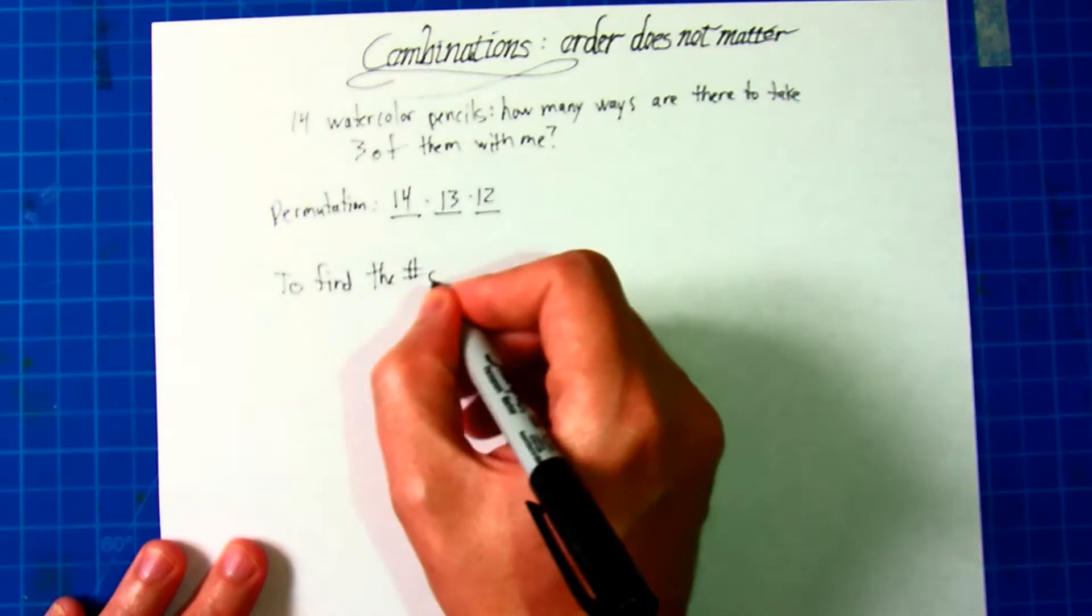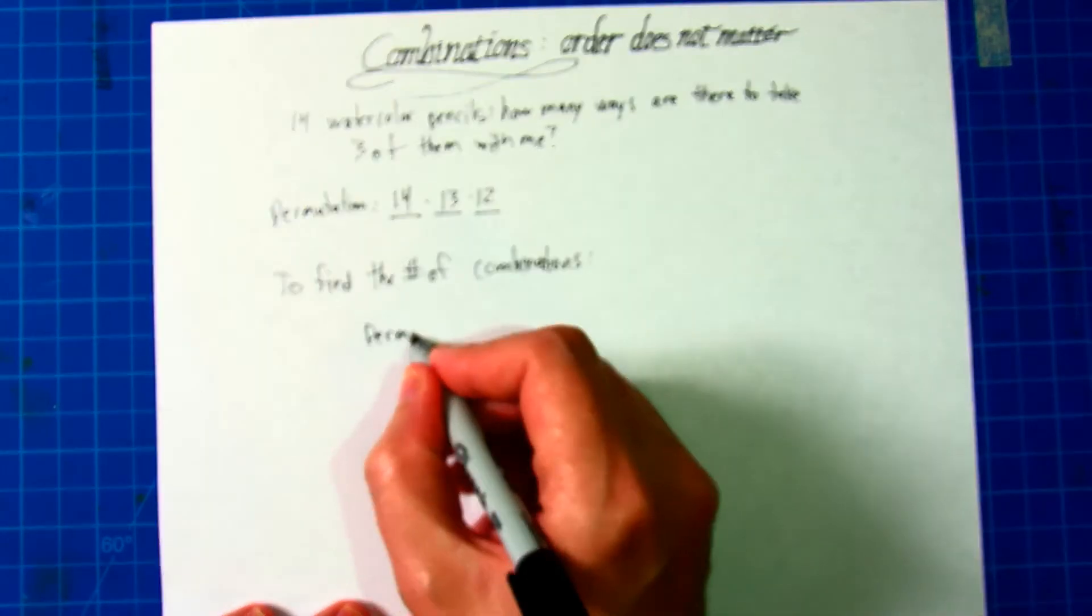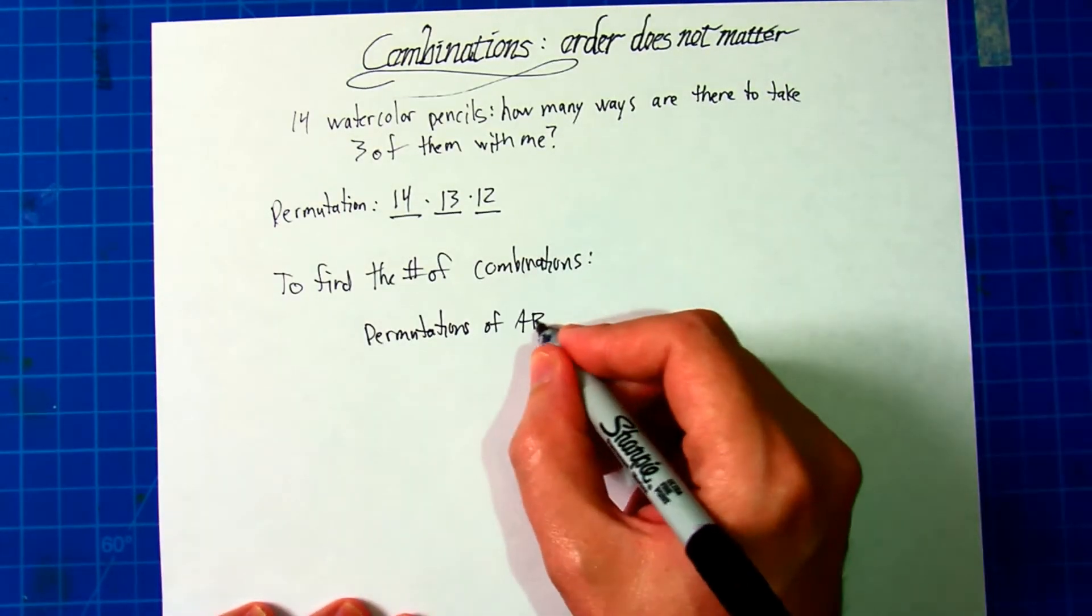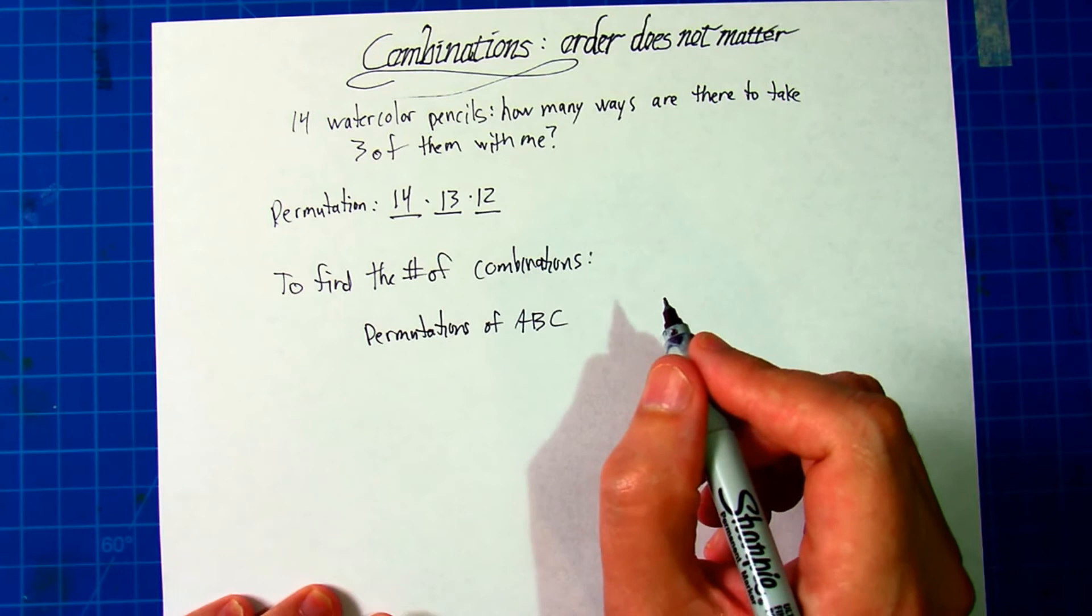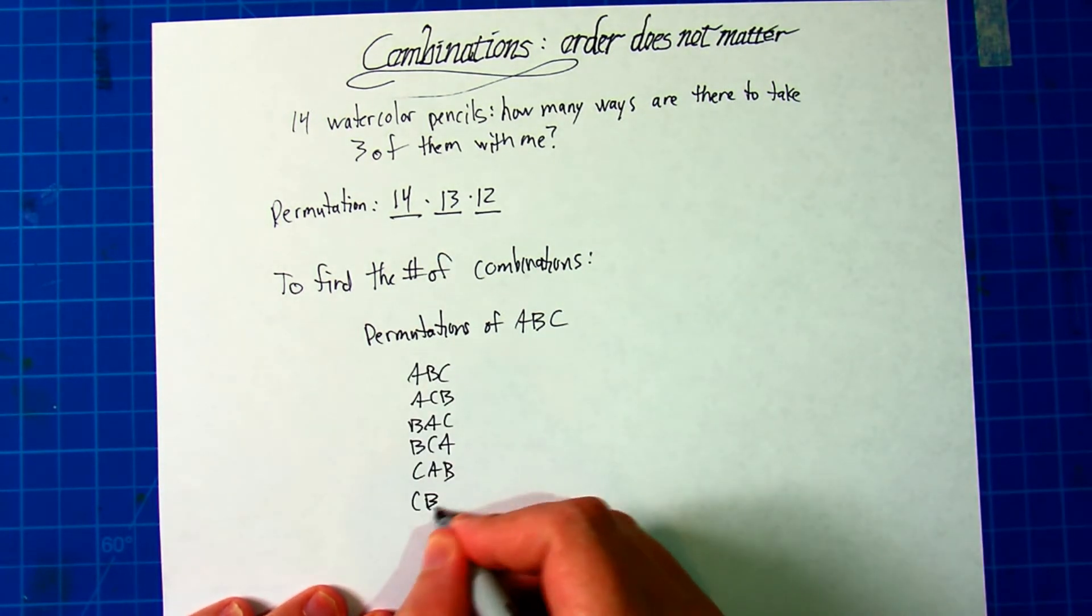To find the number of combinations, let's start with the number of permutations. Suppose the three pencils you pick are just called A, B, C. Then how many different ways are there to arrange the letters A, B, C?